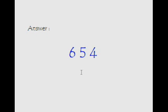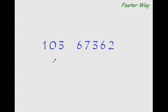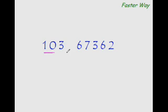Now let me show you the faster way of doing it. The faster way of dividing when the divisor is a three-digit number is not very different from what we have seen in the last video. The only thing is that since there are three digits here, you take the first two digits as your main divisor and keep the last digit as the unused digit. So once again, 10 — how many times will 10 go into 67?